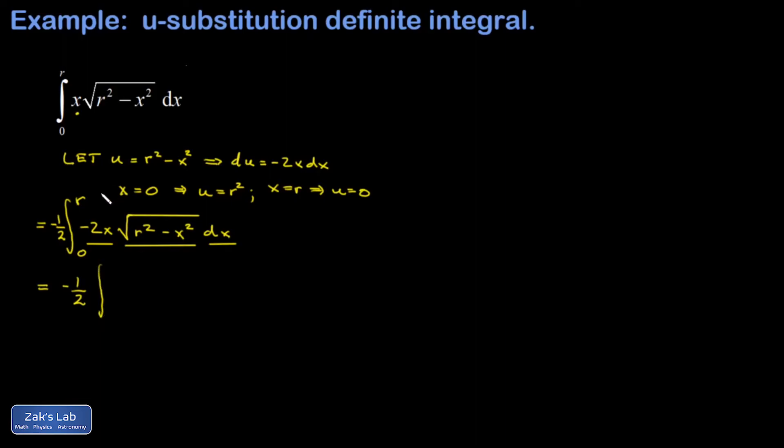Since I'm transforming completely to u now, I'm going to put in the u limits of integration. The lower limit is r squared, upper limit is 0, and my integral is transformed to the simple integral of the square root of u.